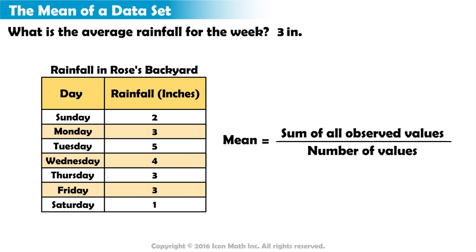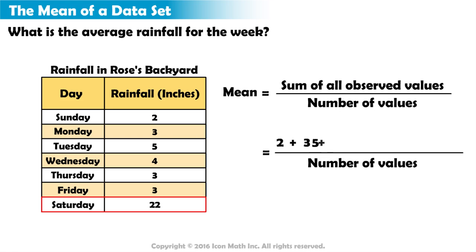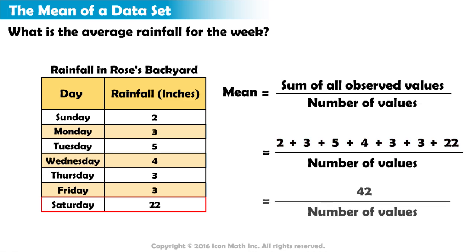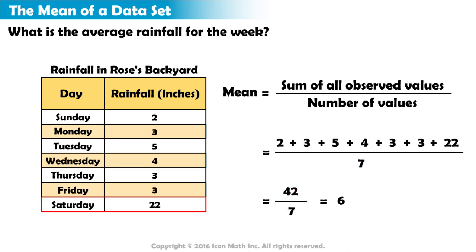Now let's explore how the mean would be affected by a value that is significantly larger than the other observed values. Imagine on Saturday, instead of only 1 inch of rainfall, Rose measured 22 inches. Make a prediction — do you think the average will be more or less than our original mean? To find the average, we would add the values again: 2 plus 3 plus 5 plus 4 plus 3 plus 3 plus 22 equals 42. 42 divided by the 7 days equals 6. The mean would increase significantly because 22 is much greater than the other values.